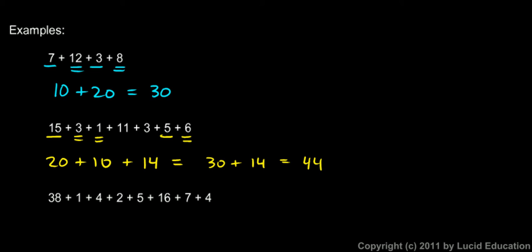Okay, this example. Does anything stand out here? Well, the 38 and the 2 together give me a 40. And then I see this 1 and 4, that's 5, and this 5 here, that gives me 10. And then look here, it's a 16 and a 4, that gives me 20. And then I have this 7 at the end, or the 7 left. So 40 plus 10 is 50, plus 20 more is 70, and then I have that 7, so I have 77 is my answer.